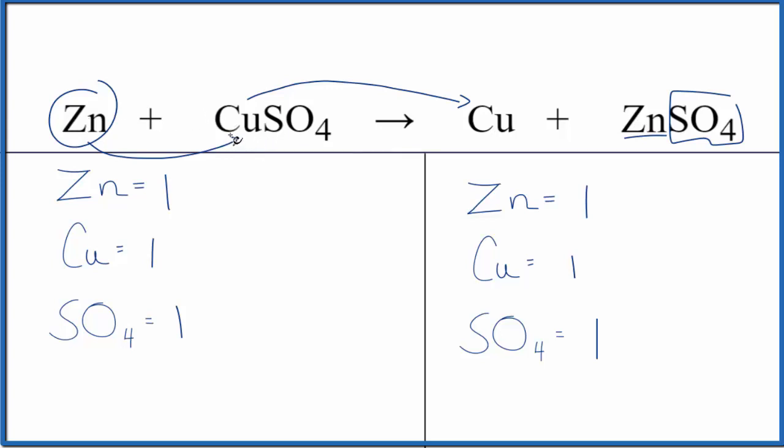If you wanted to write the states, zinc, that's a metal. This copper is also a metal. Then we have aqueous copper sulfate. This is a blue solution. And the zinc sulfate, that's also aqueous. It's clear.